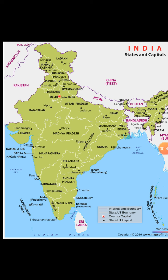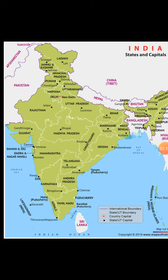The third union territory is Chandigarh, its capital is Chandigarh only. The fourth is Delhi and the capital is New Delhi. The fifth union territory, just below Gujarat, is Daman and Diu and Dadra and Nagar Haveli, and the capital is Daman. Next is Lakshadweep and the capital is Kavaratti. Then Pondicherry, whose capital is Pondicherry, and Andaman and Nicobar Islands with the capital Port Blair.